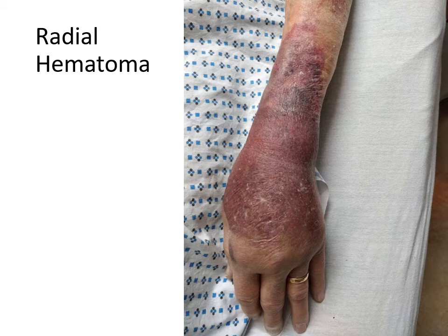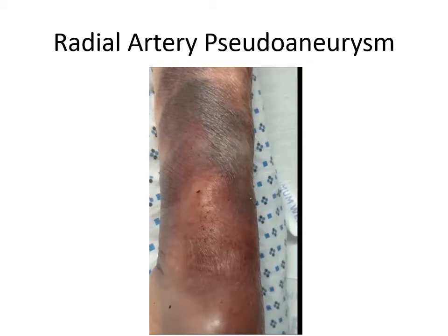Here we see a dramatic example of a hematoma in an elderly gentleman. The hematoma can be soft and easily spread across fascial planes, or it can be limited to a single fascial plane, and in rare circumstances lead to a compartment syndrome and need for urgent surgery.